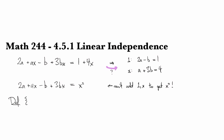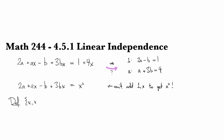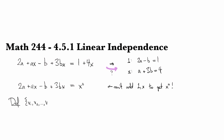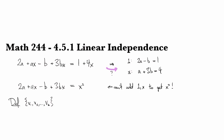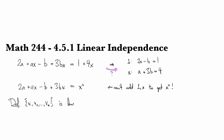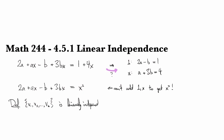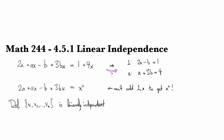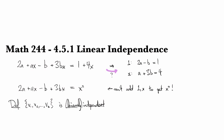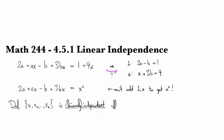So the definition is that a set of vectors v1, v2, up to vk is called linearly independent. And most of the time, I'll just call it independent and forget to say the linearly because I'm lazy.